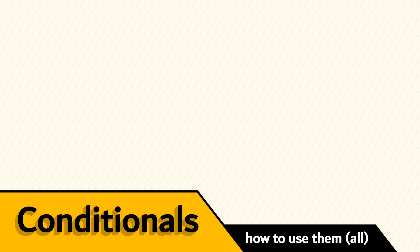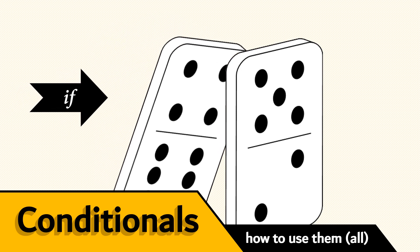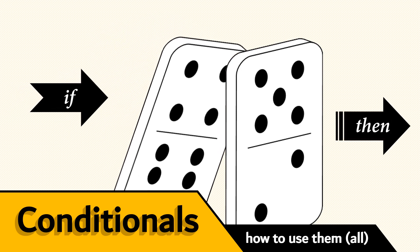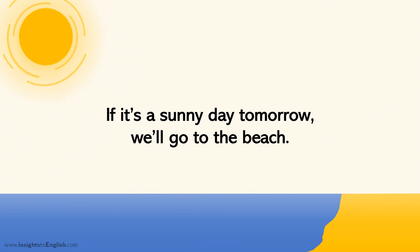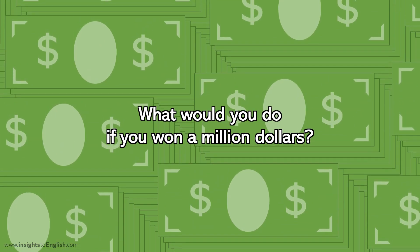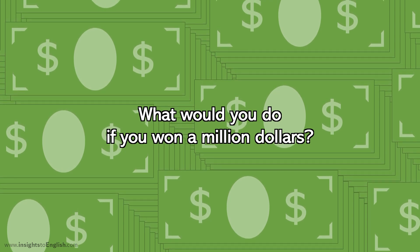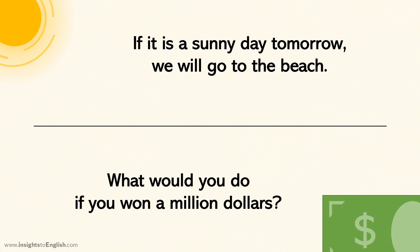Let's talk about conditionals. What are those? They are cause-and-effect sentences. We often use the word if to say something that might happen, and then we say what happens next because of it. Like, if it's a sunny day tomorrow, we'll go to the beach. Or, what would you do if you won a million dollars? Yeah, we use if all the time. So, let's suppose you know when to use conditionals and what they mean, and focus instead on how we use them.